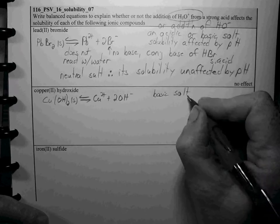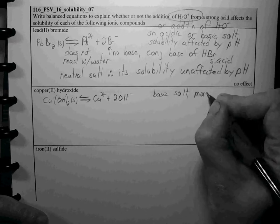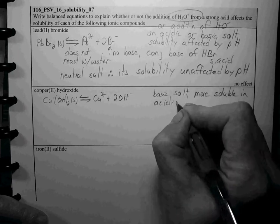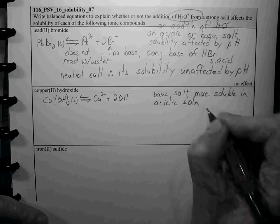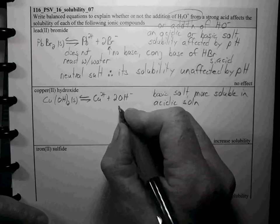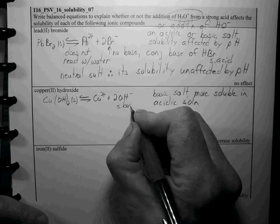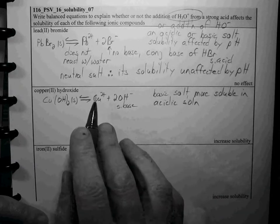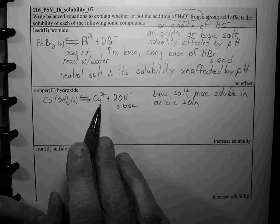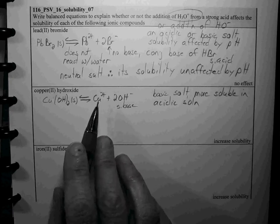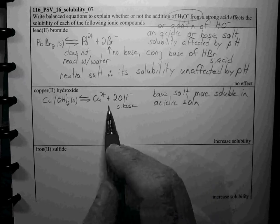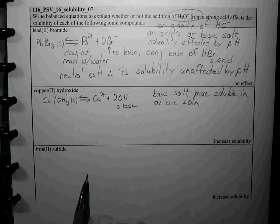So it's going to be more soluble in acidic solution. There may be some small interaction of copper 2+ in solution but it's not going to affect the pH very much. We're going to worry about this strong base in solution.